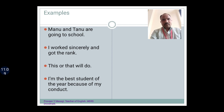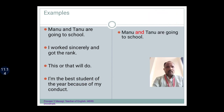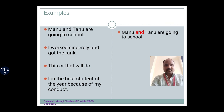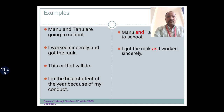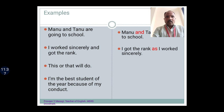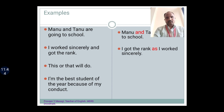Now let's see what the conjunctions are in each sentence. The first sentence: Manu and Thanu are going to school. Here 'and' is doing the duty of joining or connecting Manu and Thanu. The second sentence: I got the rank as I worked sincerely. Here 'I got the rank' is one sentence, and 'I worked sincerely' is another sentence. These two sentences are joined by the word 'as'.